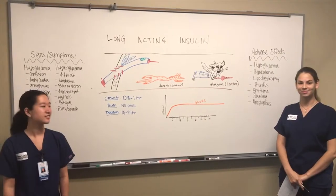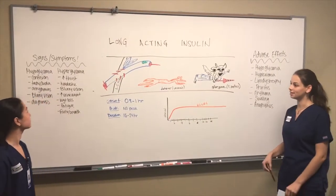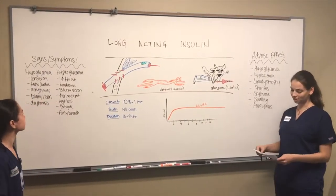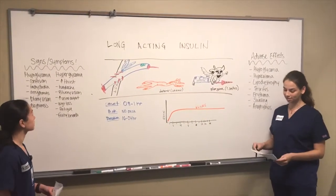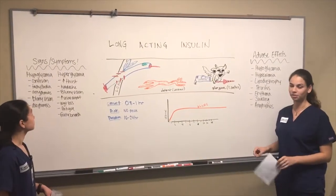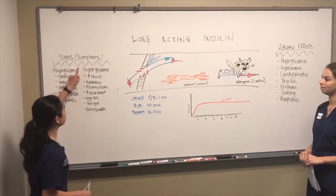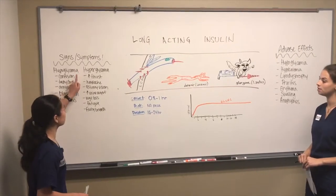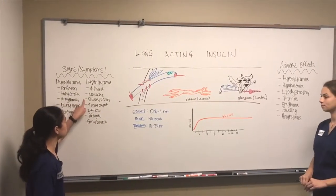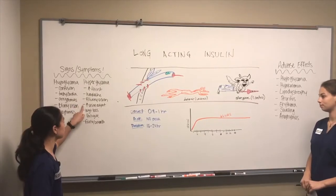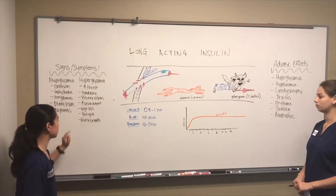Hi, I'm Caroline, and I'm Kayla, and we're doing long-acting insulin. Long-acting insulin is a maintenance insulin used to maintain blood glucose levels throughout the day. The signs and symptoms of hypoglycemia are increased thirst, headache, blurry vision, increased urine output, weight loss, fatigue, and fruity breath.